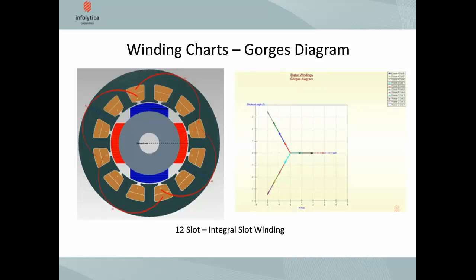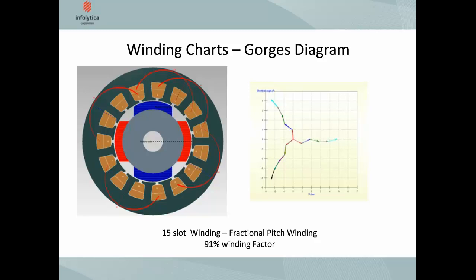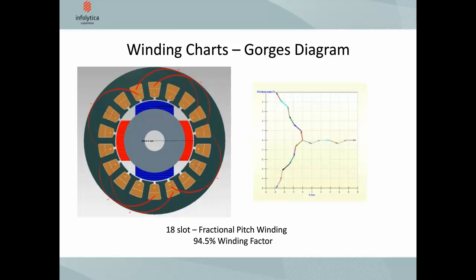Here's an example of using the Gorges diagram. For a full pitch integral slot 12-slot winding, you have an ideal star diagram. For a 15-slot motor, the diagram is no longer perfectly star-shaped — it has some excursions from the straight line along each phase. An 18-slot winding has a better winding factor of 94.5% and is closer to an ideal waveform. The Gorges diagram is quite useful for seeing how well your winding matches the ideal three-phase star winding.